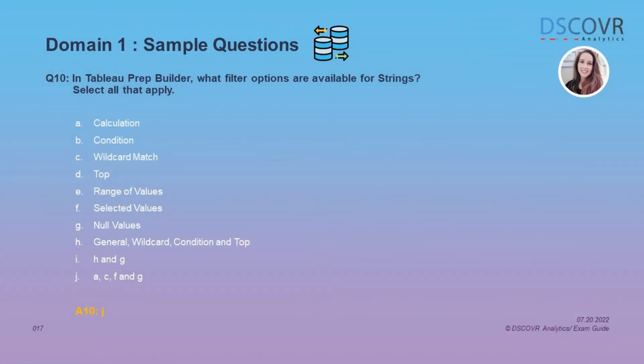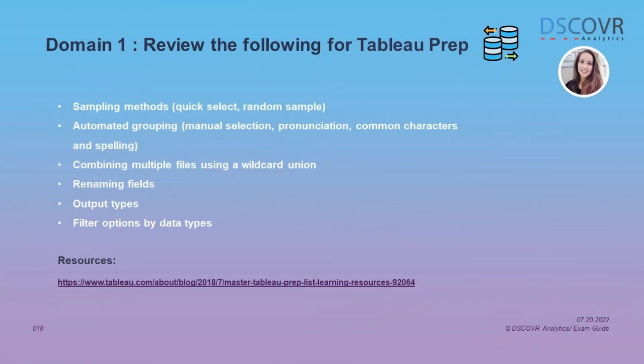You will also need to be familiar with different filter options available for different data types. For strings, we're going to see four options: Calculation, Wildcard Match, Selected Values, and Null Values. For Tableau Prep Builder, make sure you know the difference between different sampling methods, automated grouping, output types, filter options, and how to do basic operations like renaming fields or combining files using a wildcard union.